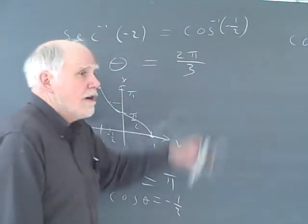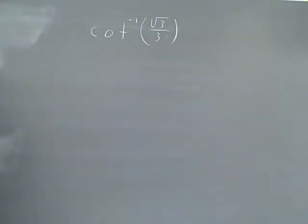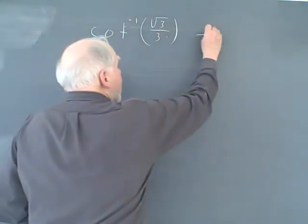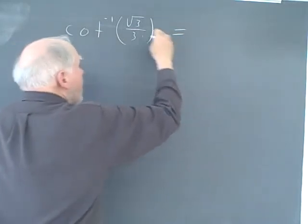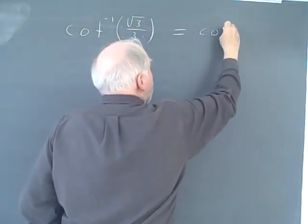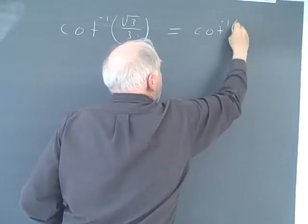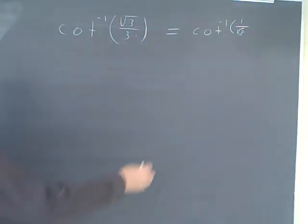Now we'll go over here and we'll do the cotangent inverse of root 3 over 3. And I think it might be useful to say, if I rationalize the numerator, multiply top and bottom by the square root of 3, I'll get 3 over 3 times the square root of 3, or I'll get cotangent inverse of 1 over root 3. And you'll see why I want to do that in a minute.